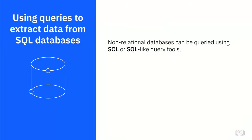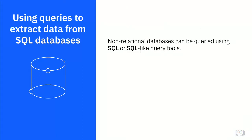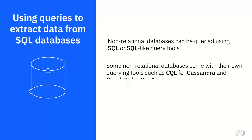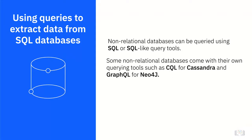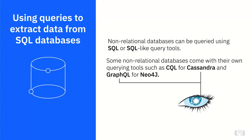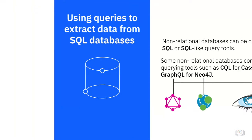Non-relational databases can be queried using SQL or SQL-like query tools. Some non-relational databases come with their own querying tools, such as CQL for Cassandra, and GraphQL for Neo4j.